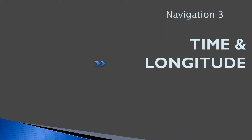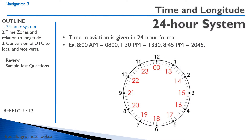The Earth rotates, and so each amount of time corresponds with a certain amount of change in longitude. The time in aviation is given in a 24-hour format, so you should become really familiar with this. For example, we have from midnight, zero Zulu, to noon, 12 Zulu, and then after that we have 13, 14, all the way up to 23:59 Zulu.